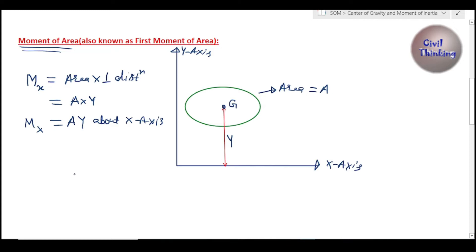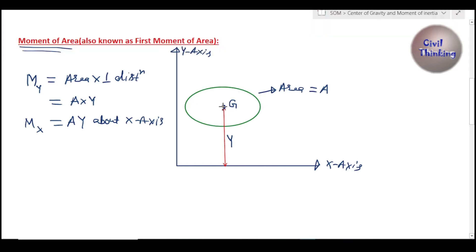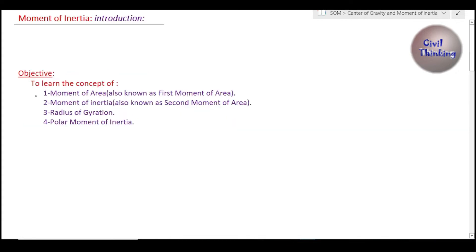Similarly, we can write My, which is again area multiplied by distance. The distance between the centroid and the y-axis is x-bar. Then My is equal to A multiplied by x-bar. This is the moment of area or first moment of area about the y-axis.